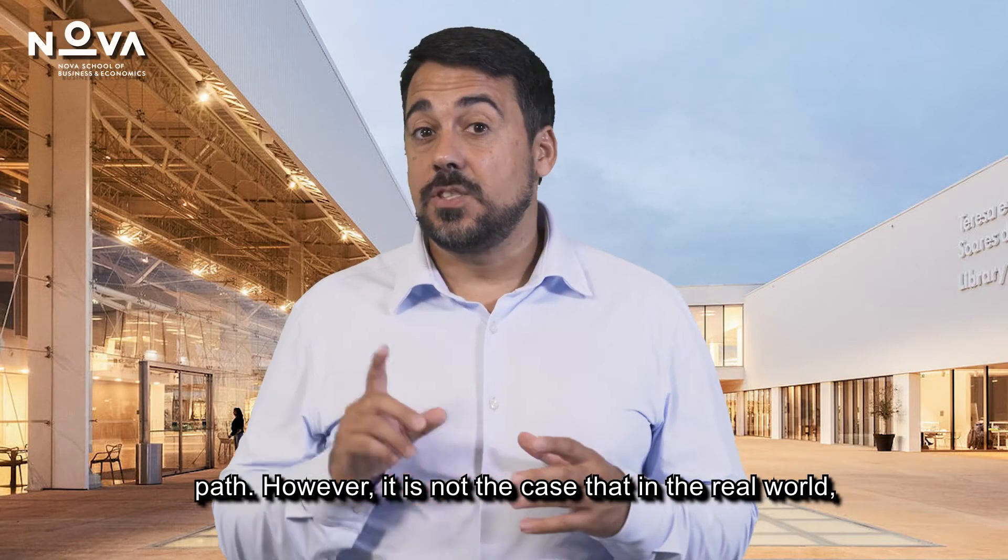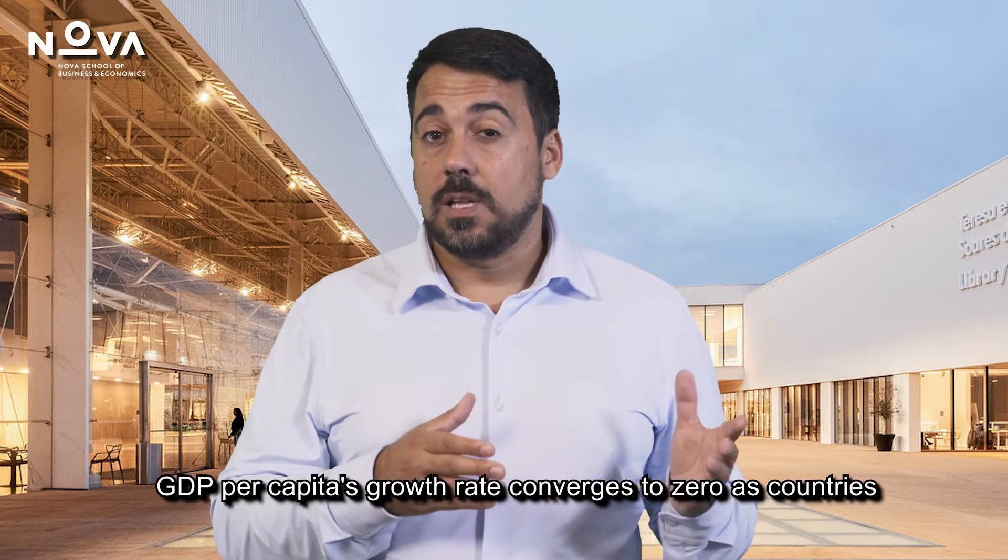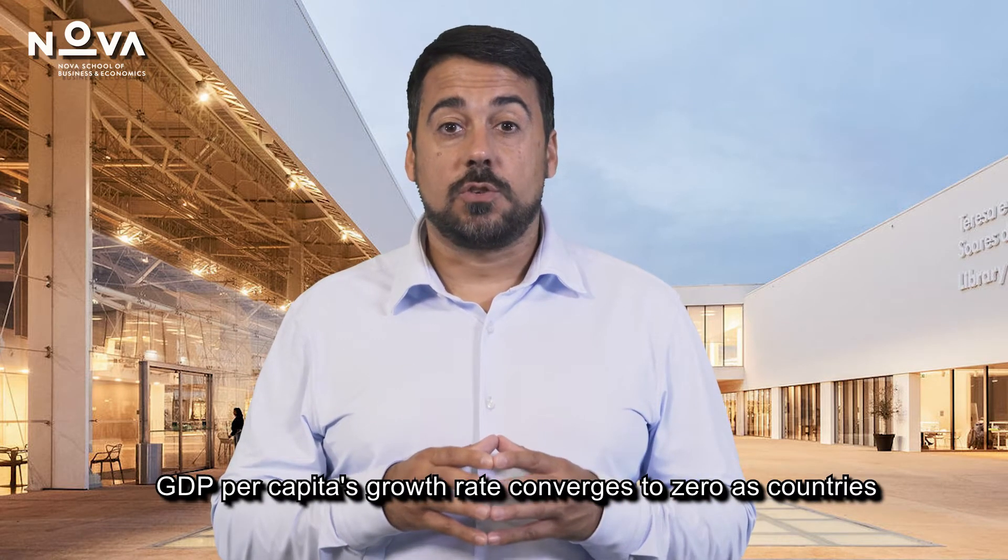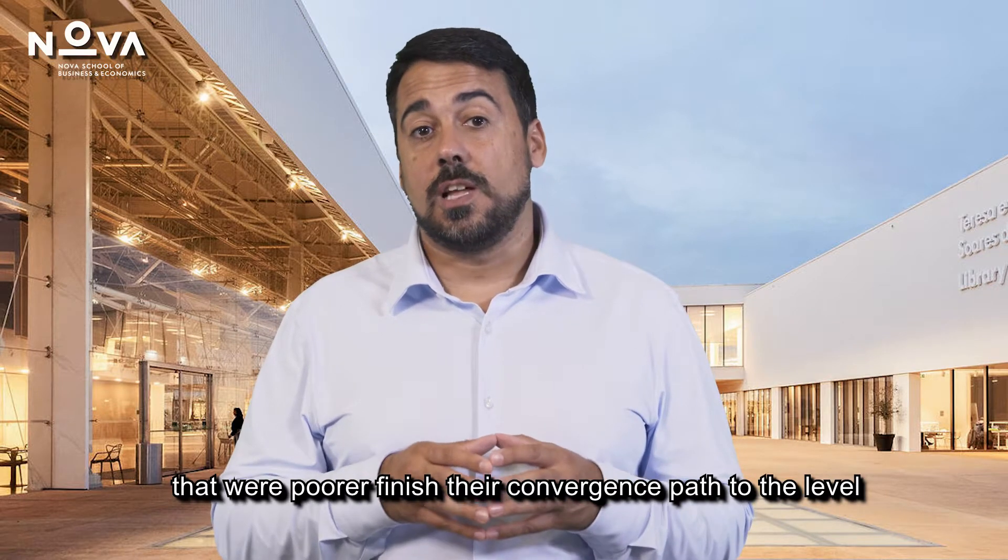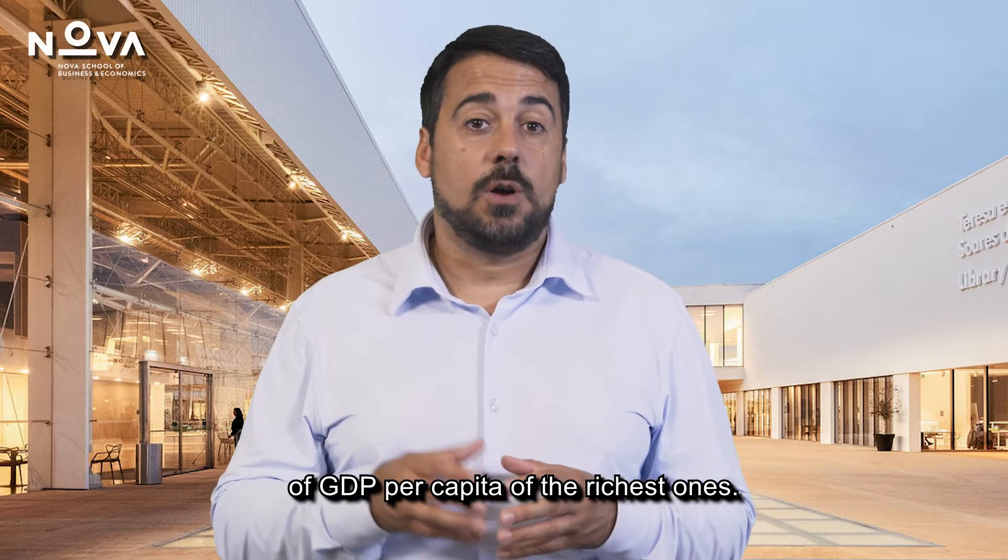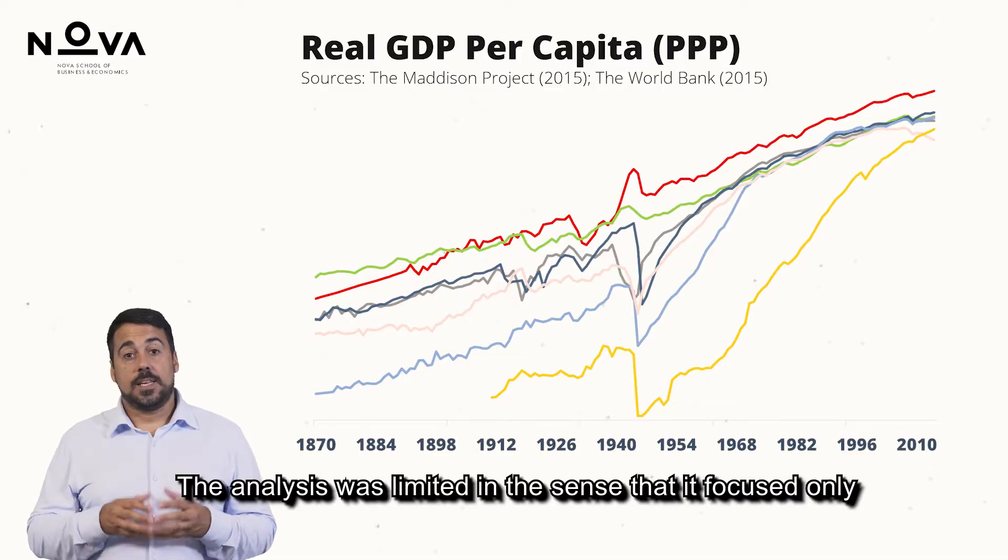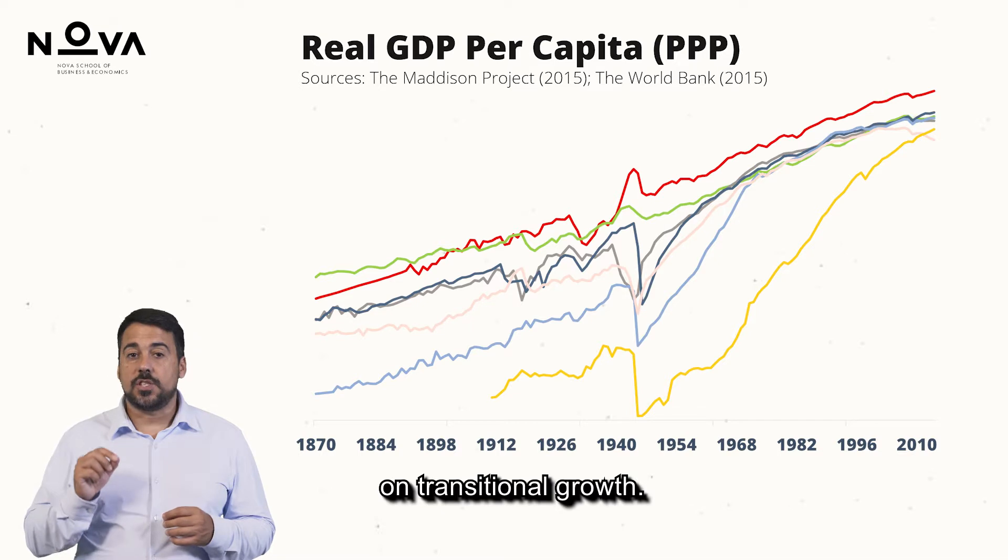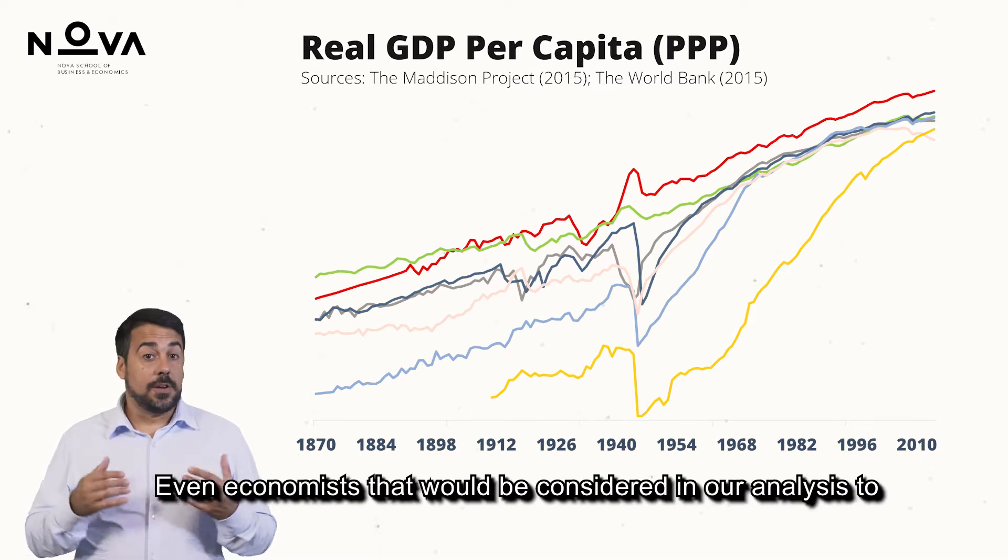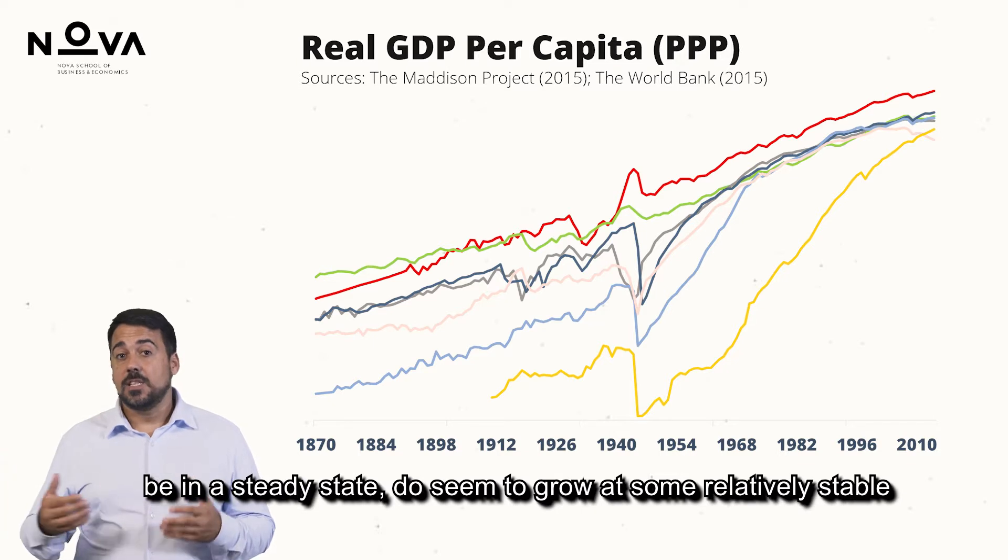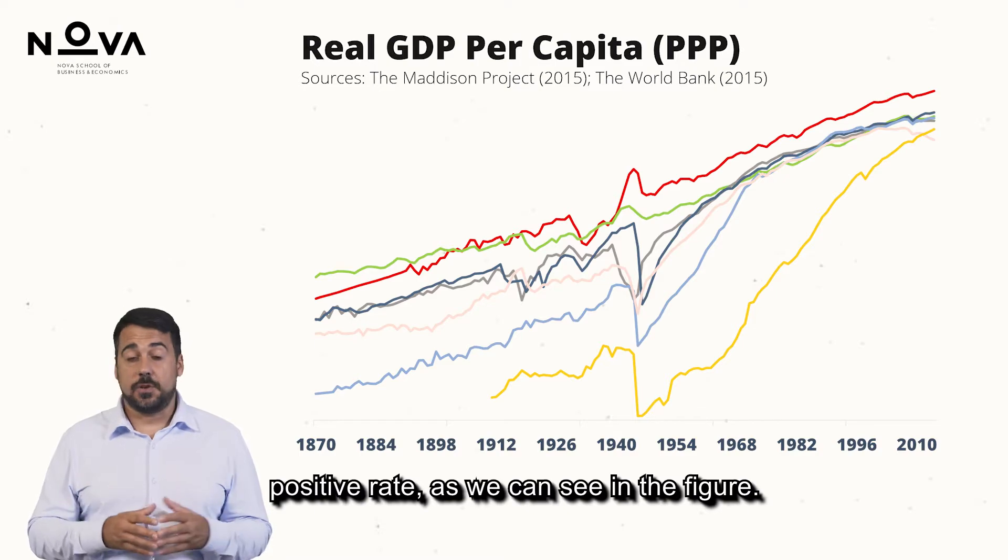However, it is not the case that in the real world GDP per capita growth rates converge to zero as countries that were poorer finish their convergence path to the level of GDP per capita of the richest ones. The analysis was limited in the sense that it focused only on transitional growth. Even economies that would be considered to be in a steady state do seem to grow at some relatively stable positive rate, as we can see in the figure.